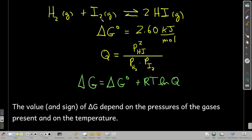For example, for the combination of hydrogen gas and iodine gas to form hydrogen iodide, when you look it up, the delta G zero formation for this reaction is 2.60 kilojoules per mole. Q is, just like K, products over reactants raised to the powers of their coefficients, and in this case, it's going to be in atmospheres. So the partial pressure of hydrogen iodide squared over partial pressure of hydrogen times partial pressure of iodine.